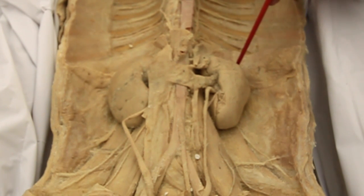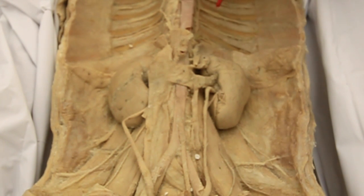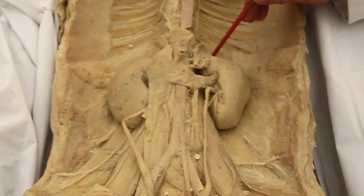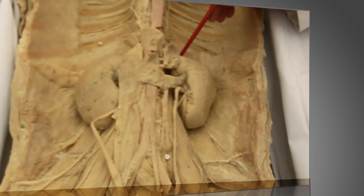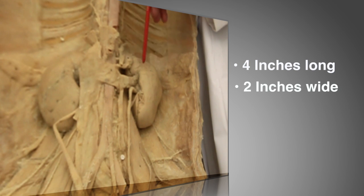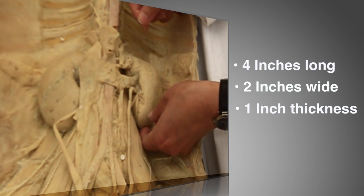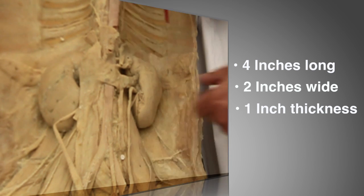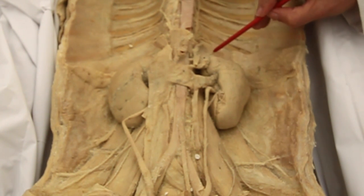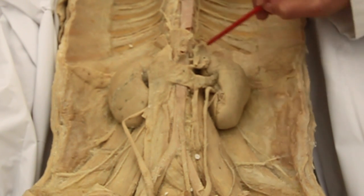The kidneys are partially covered by the lower ribs. When we talk about the kidneys, some useful numerics to remember are 4, 2, 1, 4, 4. By 4, I mean it's 4 inches long. By 2, it's 2 inches wide. By 1, it's 1 inch in thickness. The next 4 means each kidney spans over 4 vertebrae.